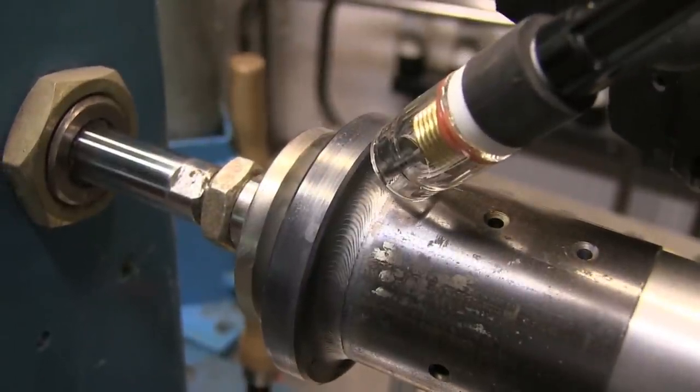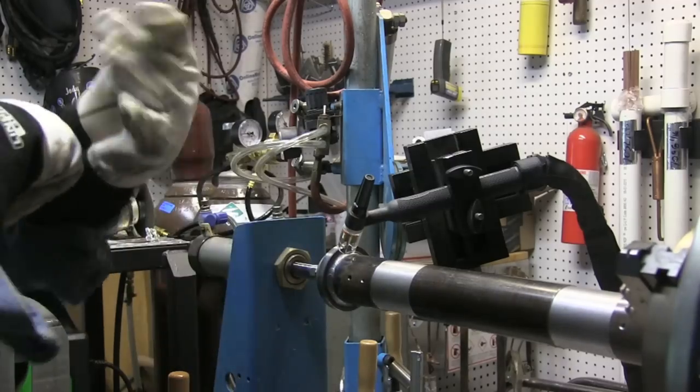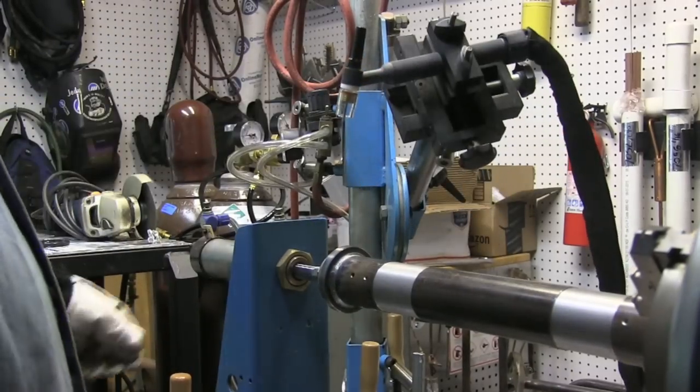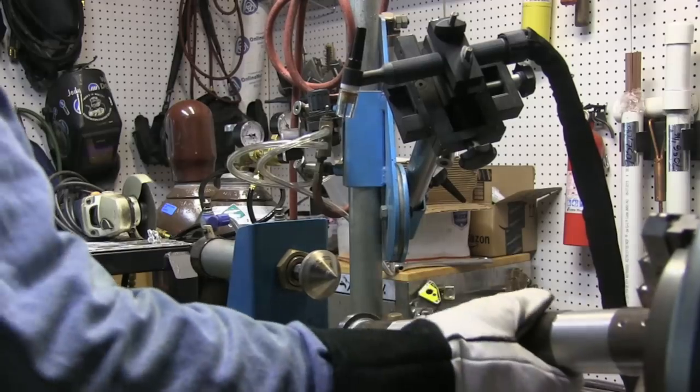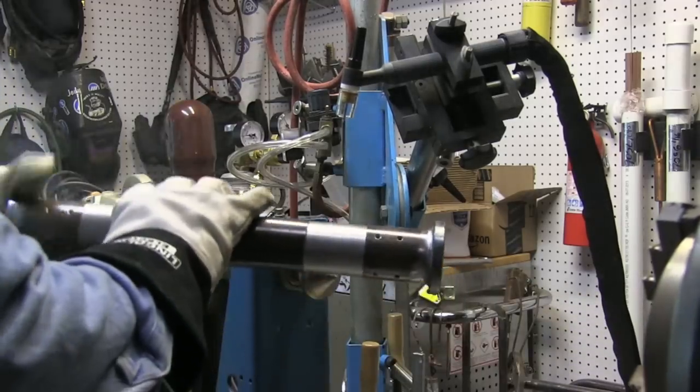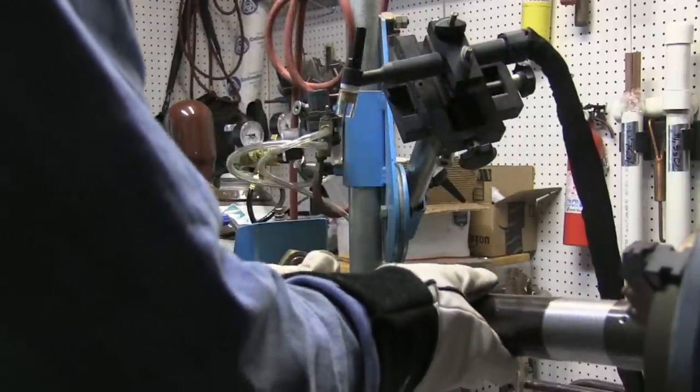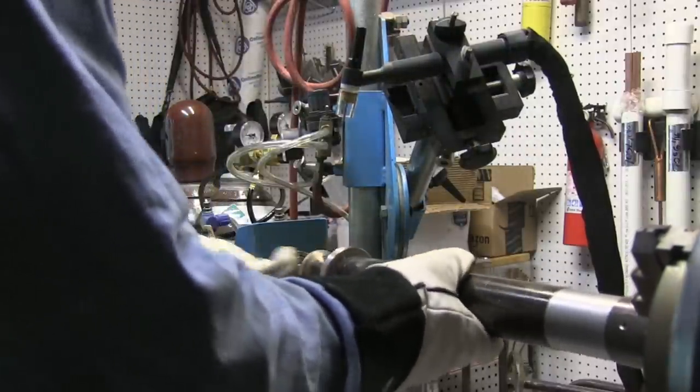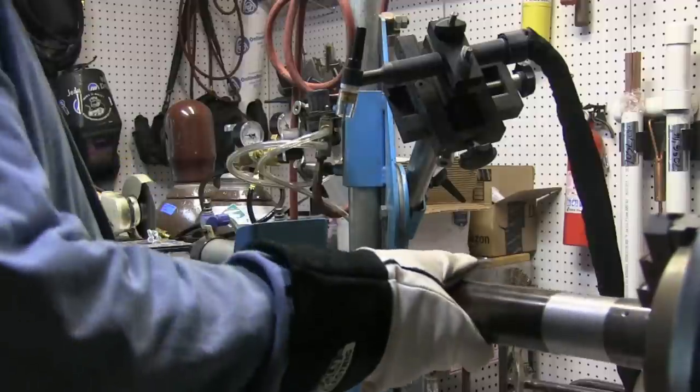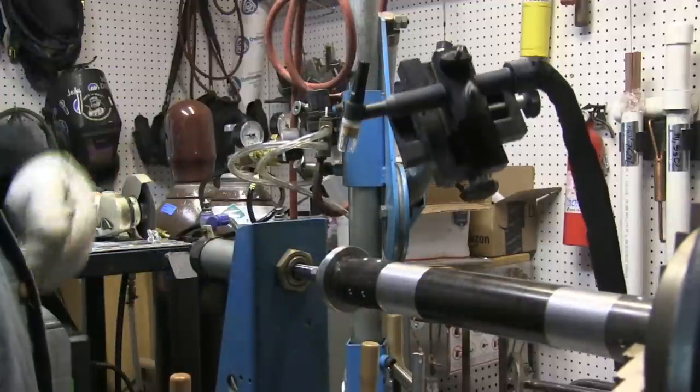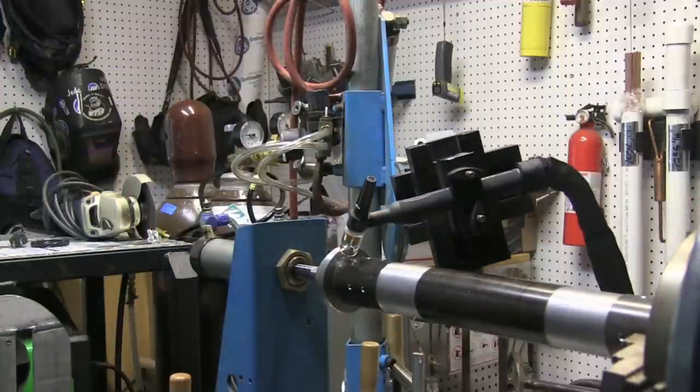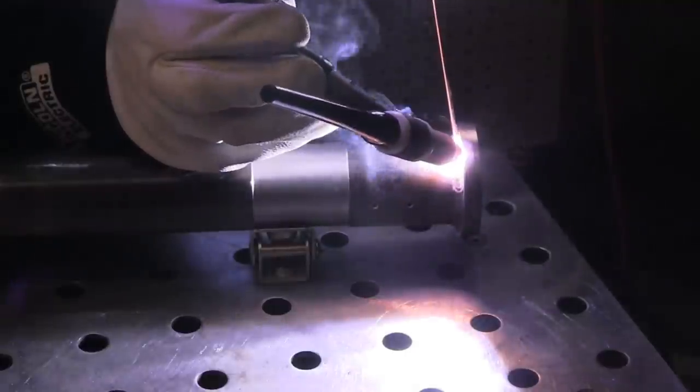Makes for a really nice looking weld on a turntable like this. Same deal, pop the torch out of the way, get the tailstock to open up. I can put in a new part in no time and keep going.